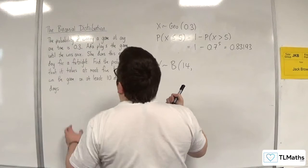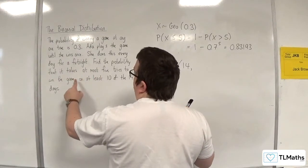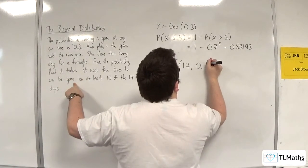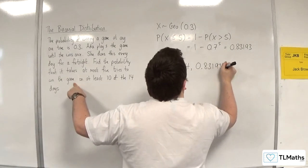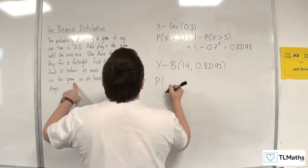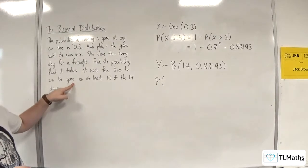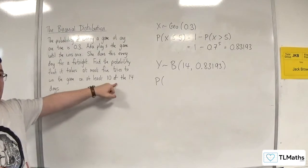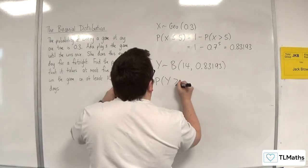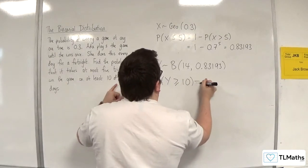The probability of success, the probability that it takes at most five tries to win the game, we've just worked out. It's 0.83193. And I want to work out the probability that she does this on at least 10 of the days. So at least 10, greater than or equal to 10.